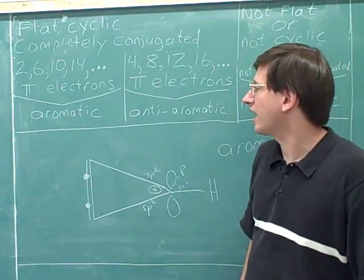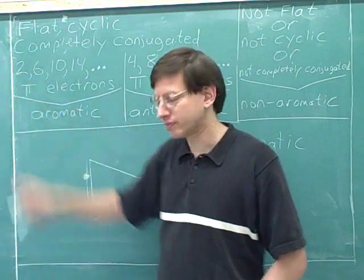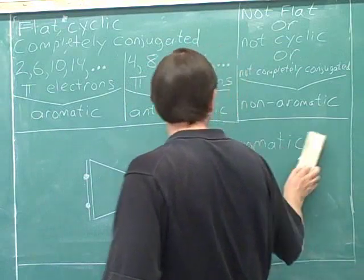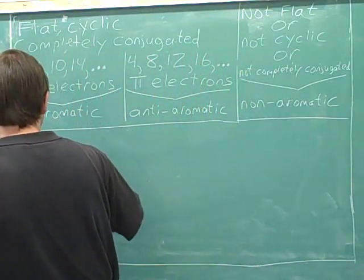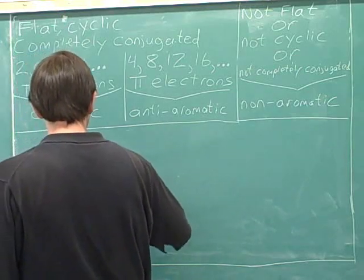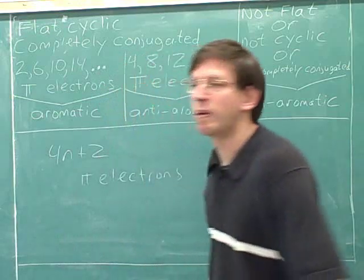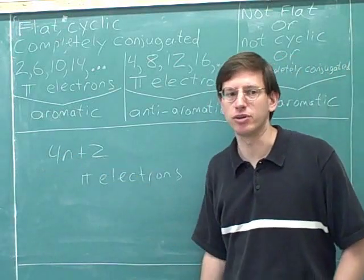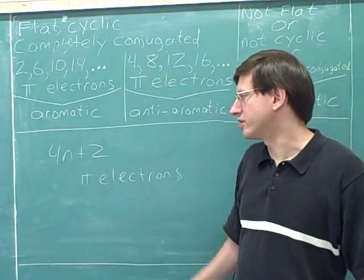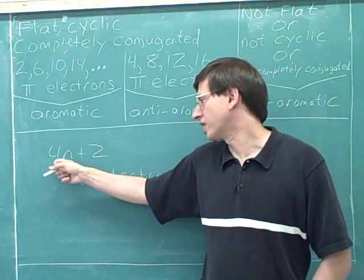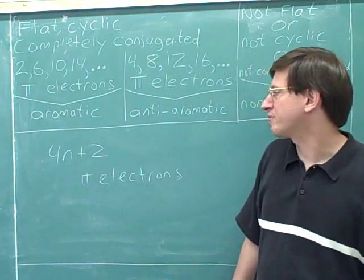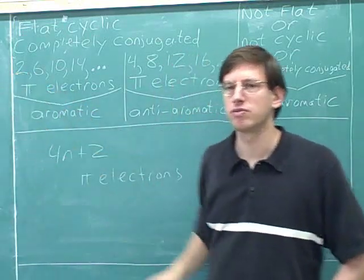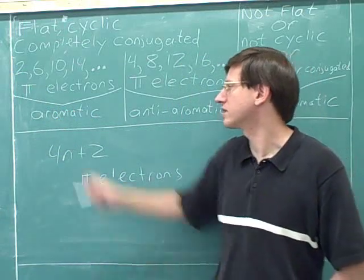A lot of people forget, when using Hückel's rule, that this series starts with the number 2. Remember that Hückel's rule states the number of pi electrons in an aromatic compound is 4n+2. Many people think the first number in the series should be 6, because when n=1, the formula gives 4+2=6. But you've got to keep in mind that n can also be 0. When n=0, we get 0+2=2. So a compound with two pi electrons is also aromatic.